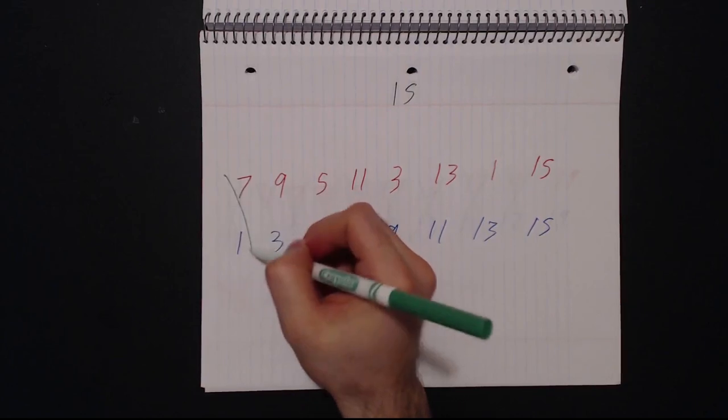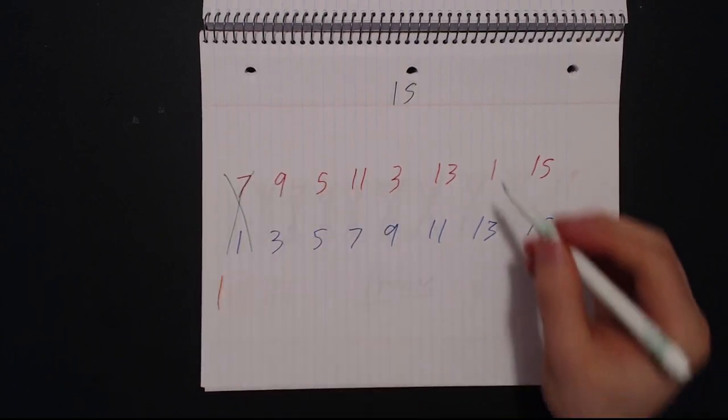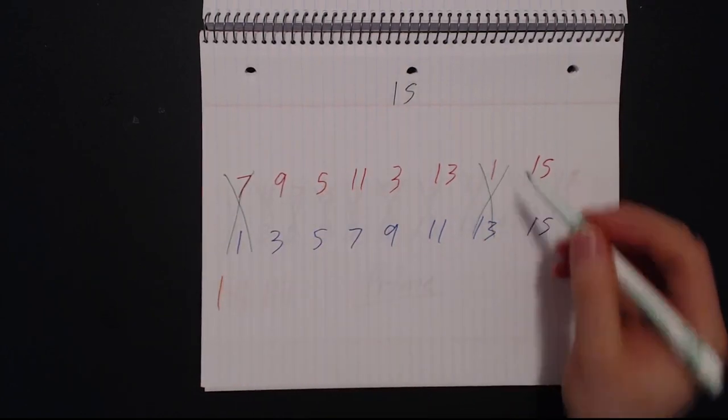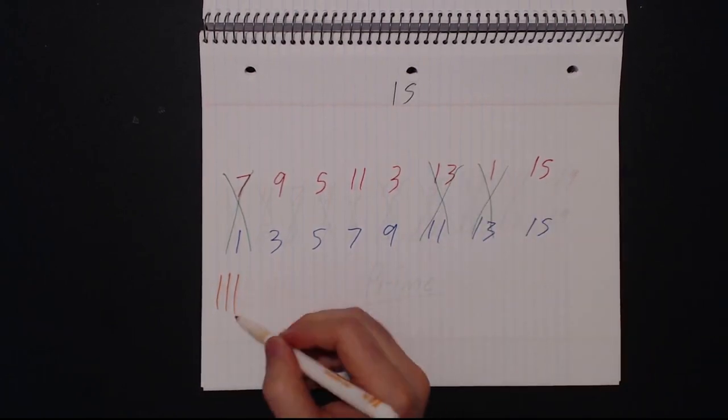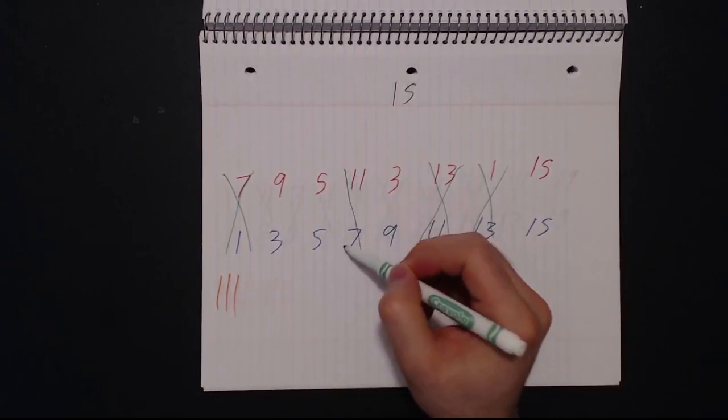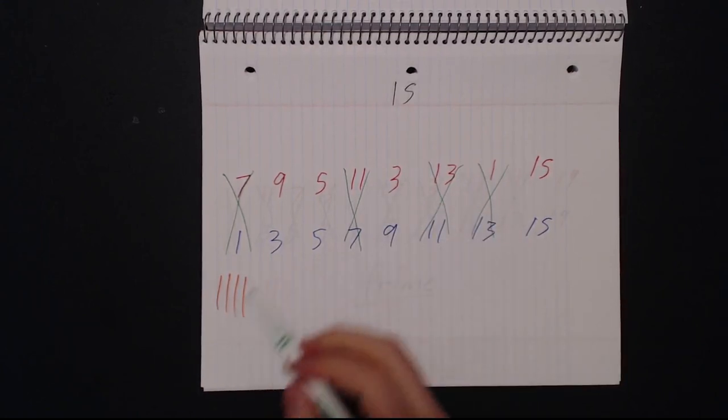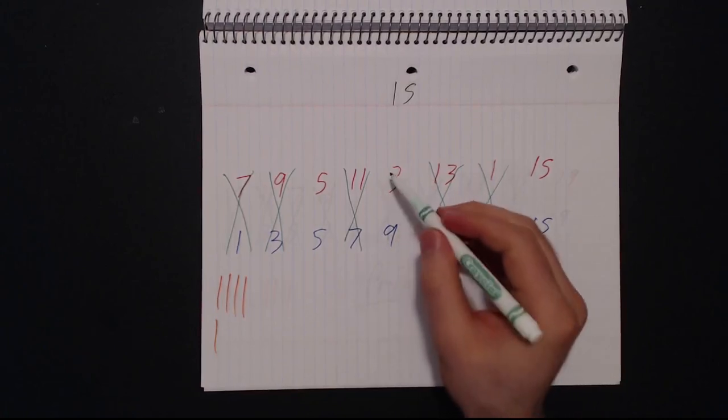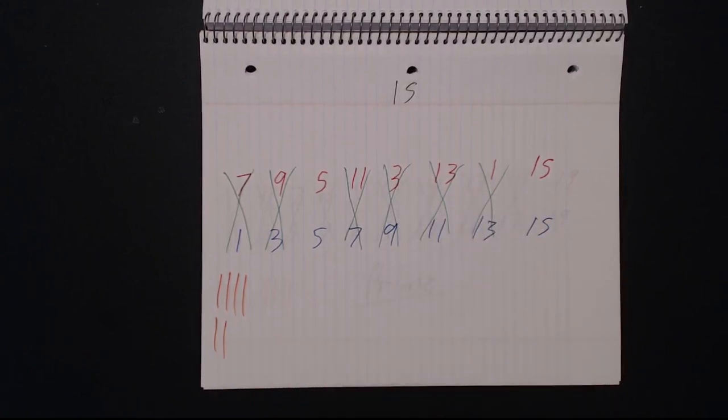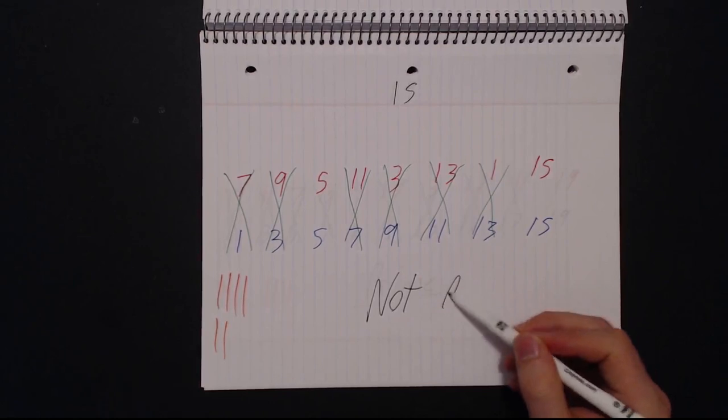Let's do an example that's not prime. We do all of the crosses as usual. We got to the beginning, so we have to move one column over. We got to the beginning again. However, this time the tick marks don't match, so it is not prime.